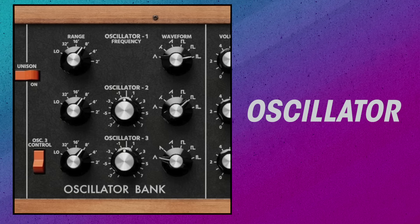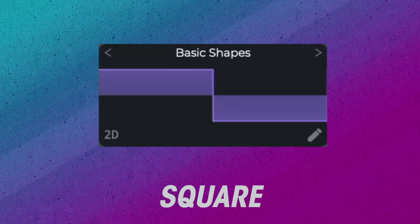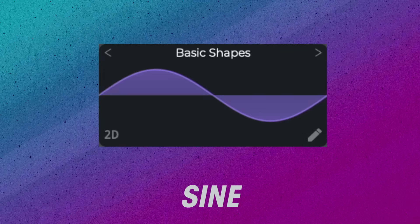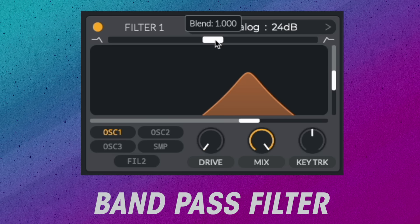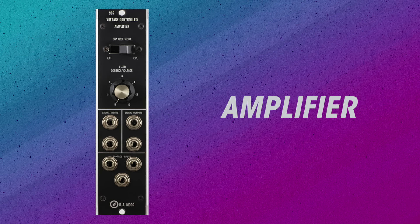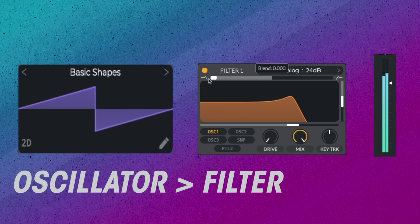Subtractive synths are set up like this: we start with a sound source, also known as an oscillator. There are about four or five waveforms that these oscillators make — saw, square, triangle, and sine. This oscillator then runs into a filter. Common filter designs include the low pass, high pass, and the band pass. Finally, this signal runs from the filter into an amplifier, which controls the intensity or volume of the sound.